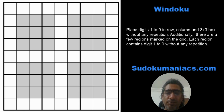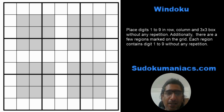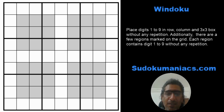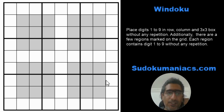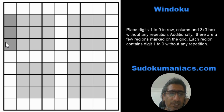Each gray box is an extra region containing digits one to nine. However, though we see four extra regions here, one thing a solver should always remember is that there are five more extra regions hidden in the grid. This is especially important for those new to this variant. I'm going to mark out each extra hidden region we'll use when solving the Sudoku.